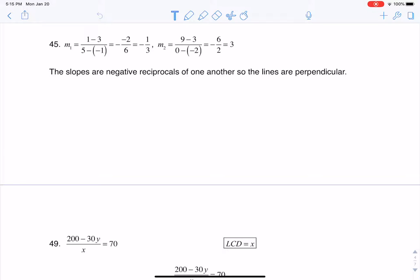Hey Math31, I had a question coming out of section 2.2 number 45. This is where we were given two sets of ordered pairs and we were asked to determine if the slope of the lines that pass through those pairs of points are parallel or perpendicular.